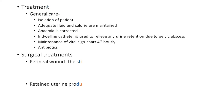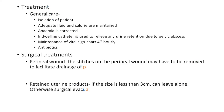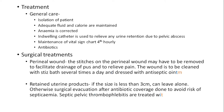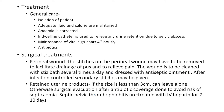Treatment includes general care: isolation of the patient, adequate nutrition, and maintenance of fluid and calorie intake. Anemia is to be corrected. An indwelling catheter is used to relieve urinary retention due to pelvic abscess, and vital signs are carefully monitored with appropriate antibiotic therapy. Surgical treatment for perineal wounds: stitches may have to be removed to facilitate drainage of pus and relieve pain. The wound should be cleaned with sitz baths several times a day and dressed with antiseptic ointment. After infection is controlled, secondary sutures may be applied.